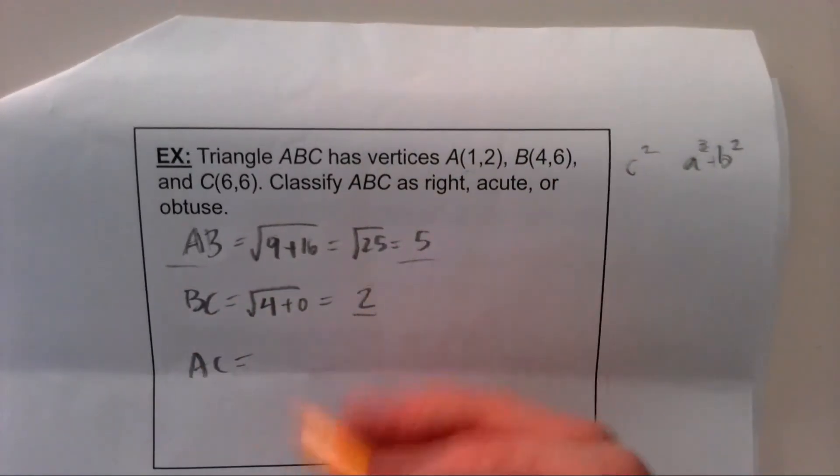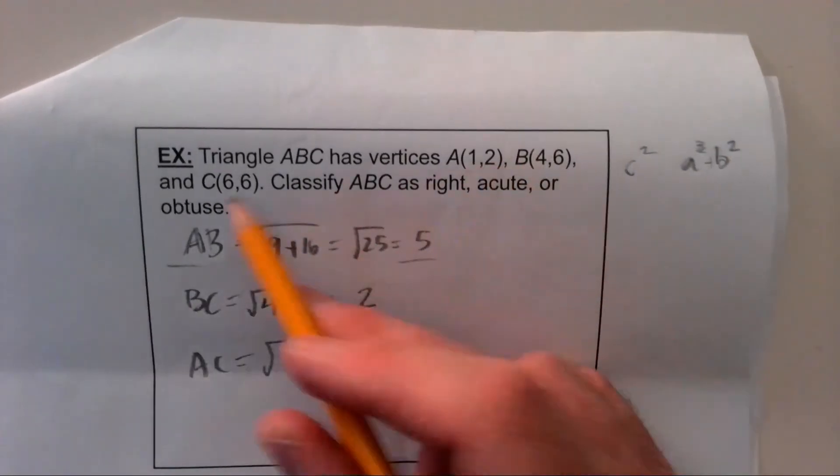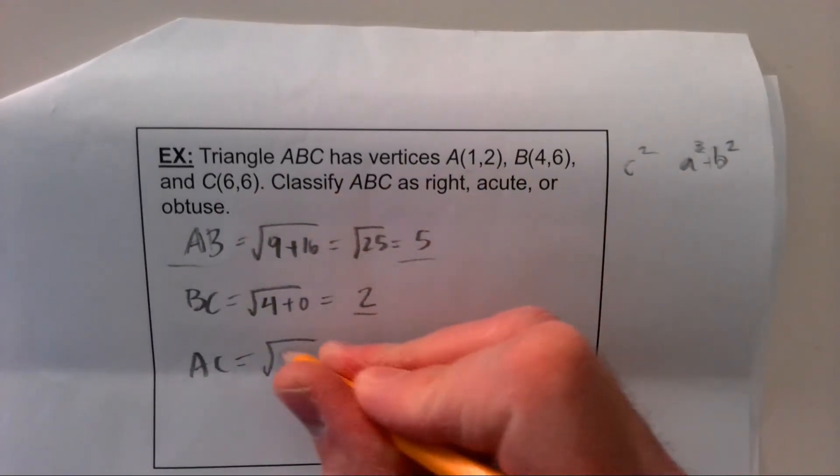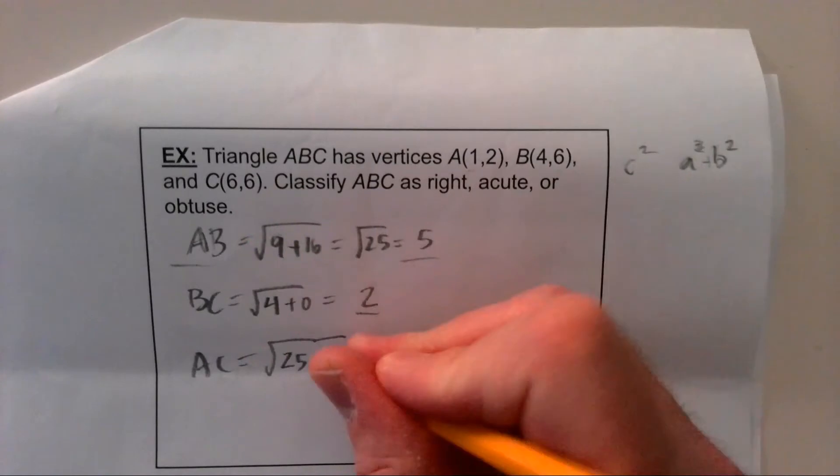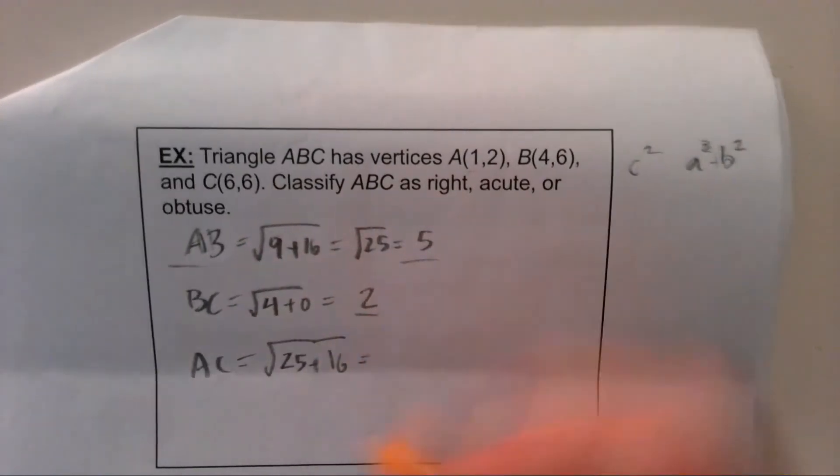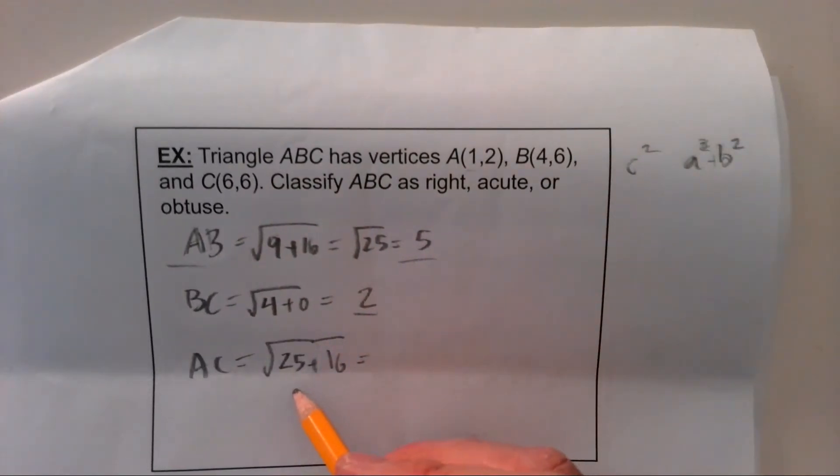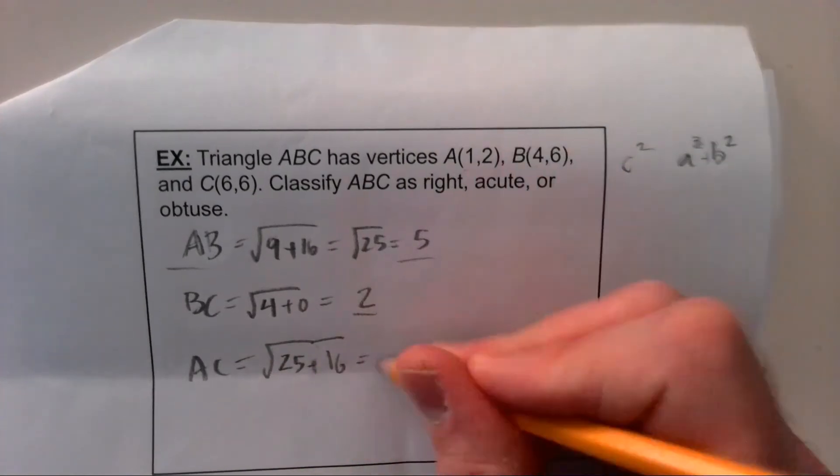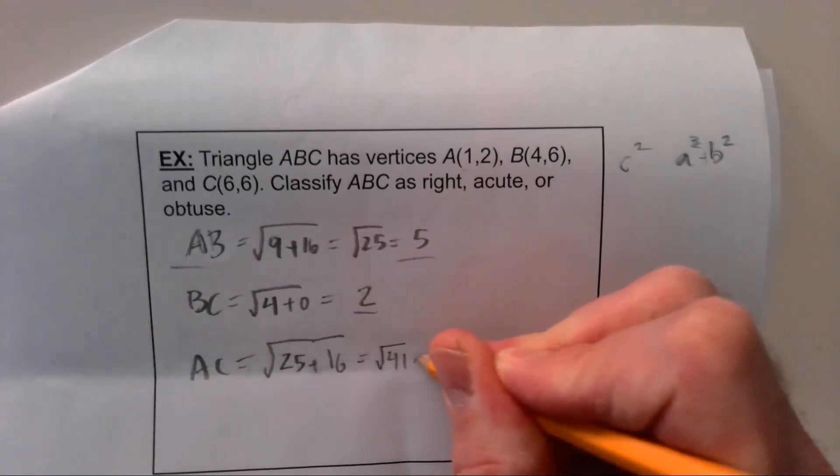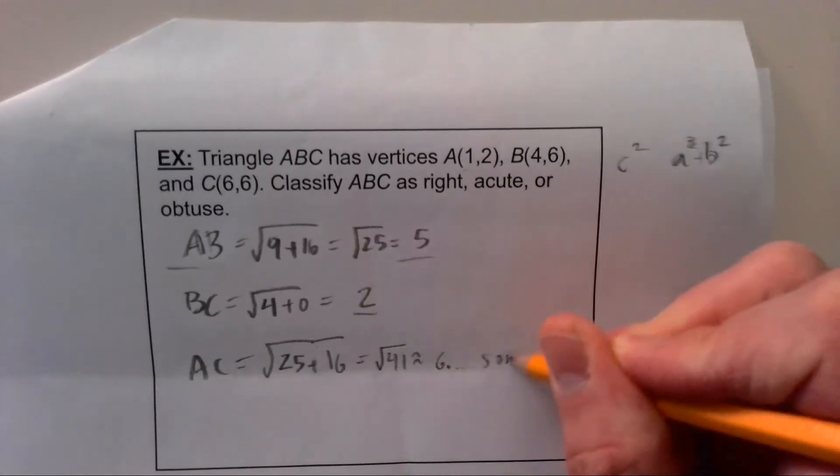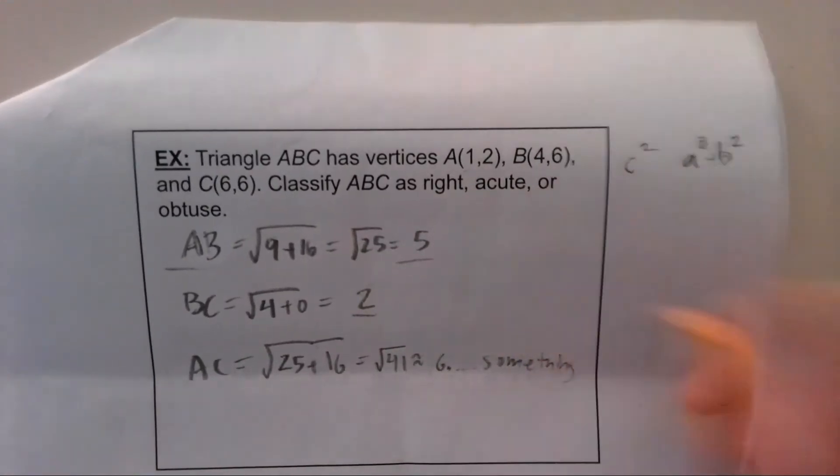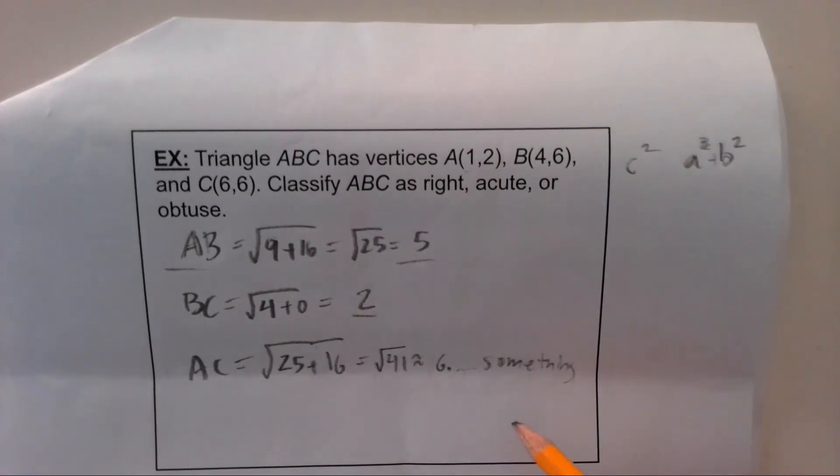Okay, so I got a 5, I've got a 2, and then AC. Let's see. From 1 to 6, that's a change of 5. I've got to square that change. And from 2 to 6 is a change of 4. I've got to square that thing. Oh jeez, what's that? That's 25 and 16, so it looks like that's going to be the square root of 41, which is approximately 6 point something. I don't know. You can look that up on your calculator. I know it's more than 6 and not quite 7.